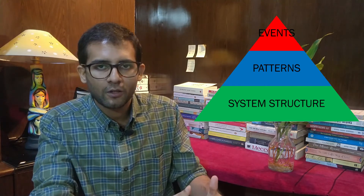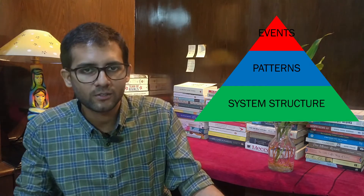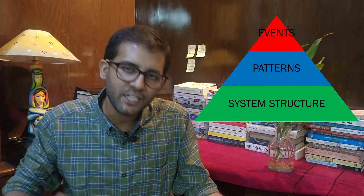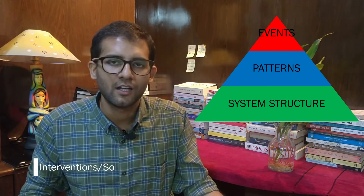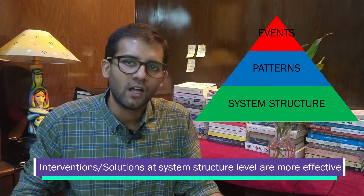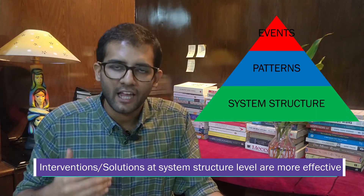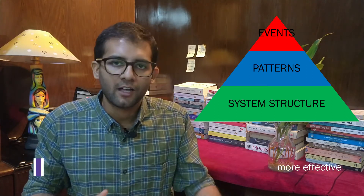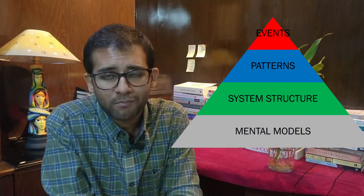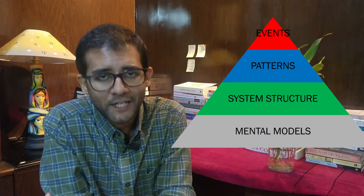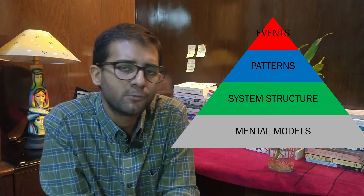So there is event, pattern, and system structure. When you intervene in the system structure, your interventions are much more sustainable, effective, and long-term oriented. If you take one more step backwards, there is also mental model, but I will not go into that in this video.